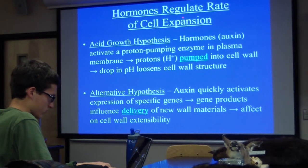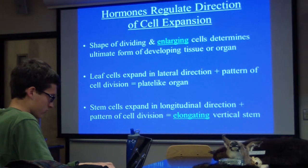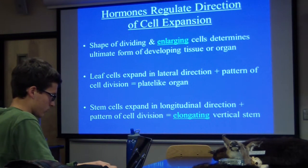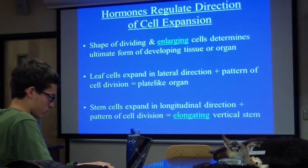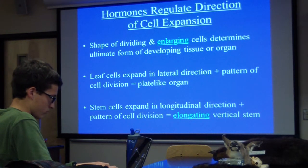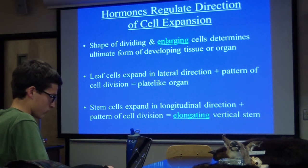Hormones are regulating the rate of cell expansion, but hormones are also regulating the direction of cell expansion. This fits into morphogenesis, or the overall shape of that adult plant. The shape of dividing and enlarging cells determines the ultimate form of the developing tissue or organs.